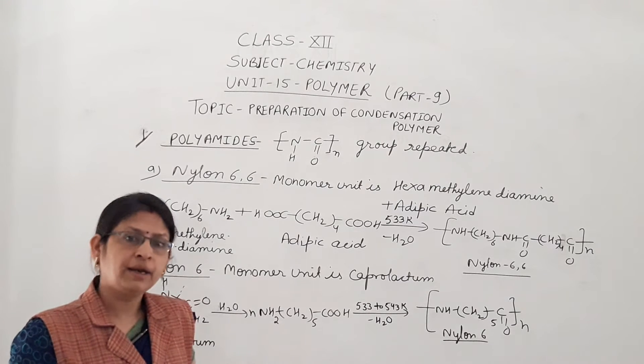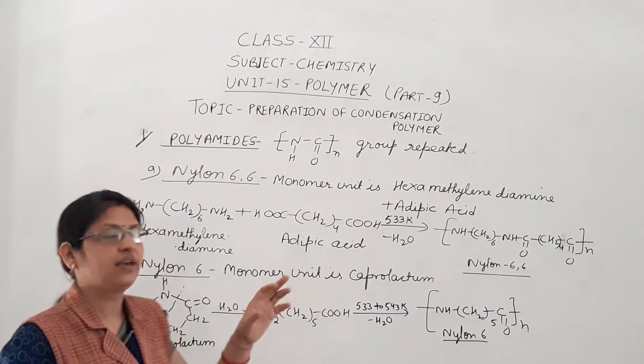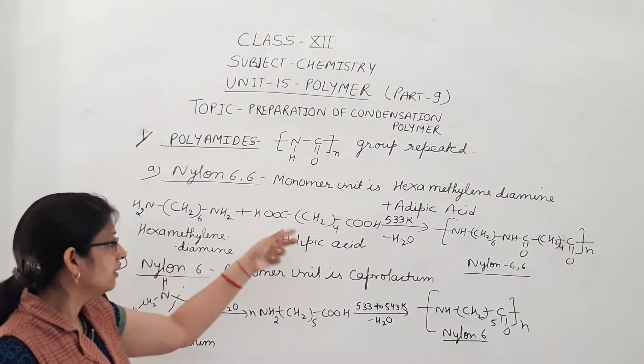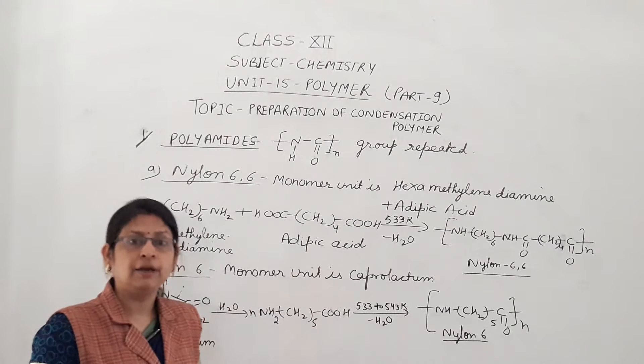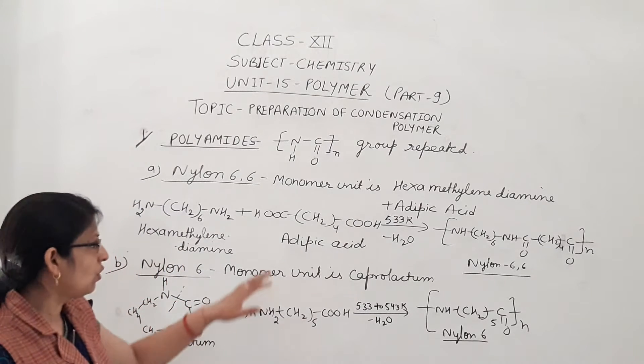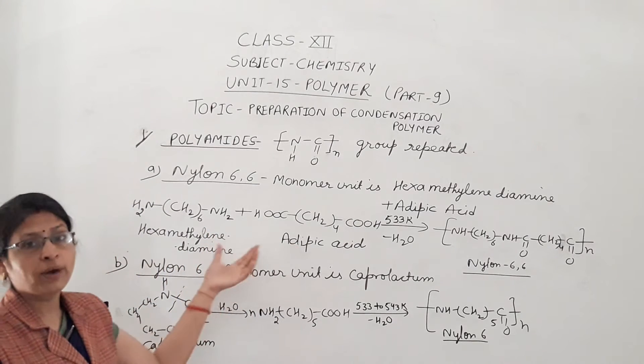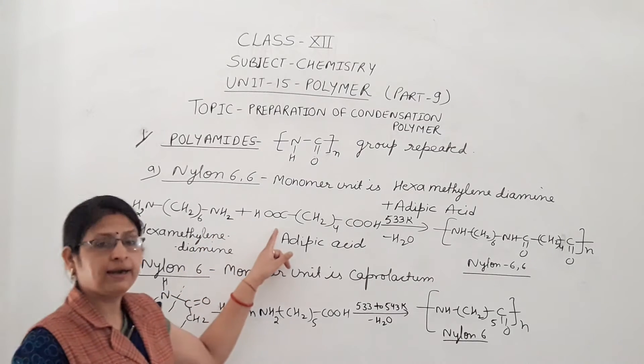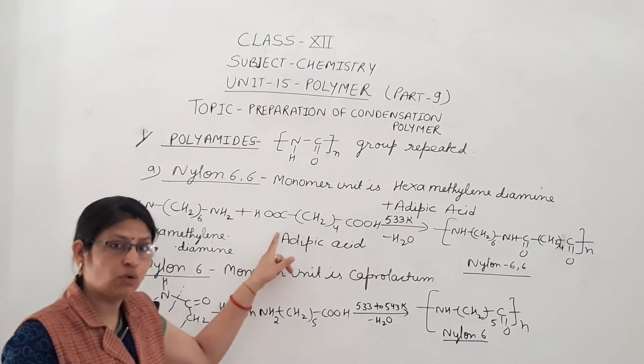One question generally asked in board exam - what is the significance of 6-6 here? The 6-6 denotes the carbon number present in monomer unit. So here both monomer units contain functional groups. Here amino group is present and here carboxylic acid group is present.